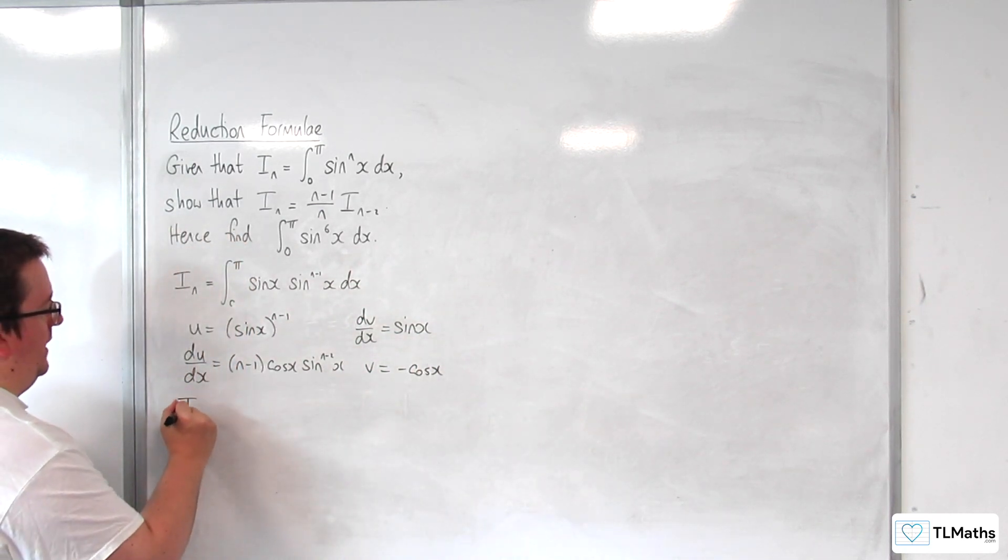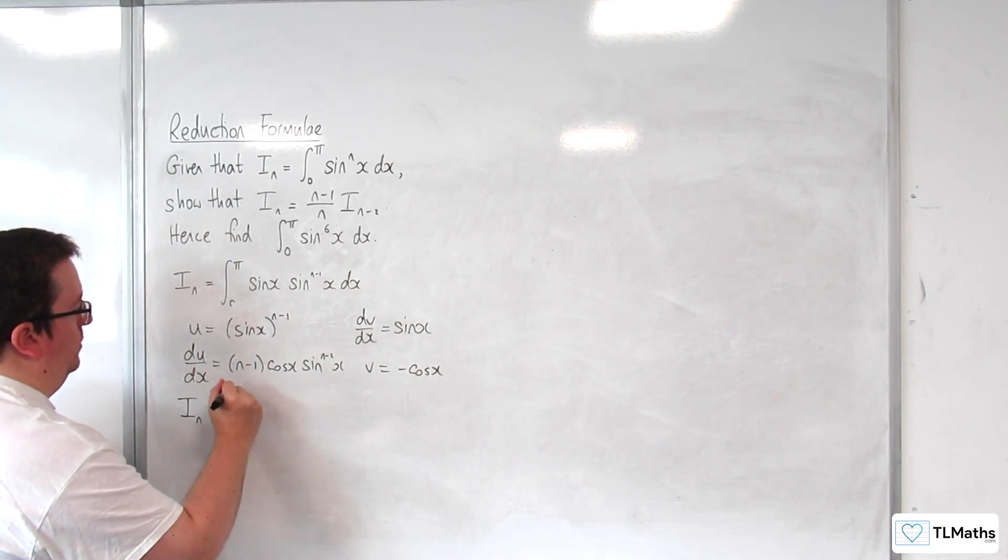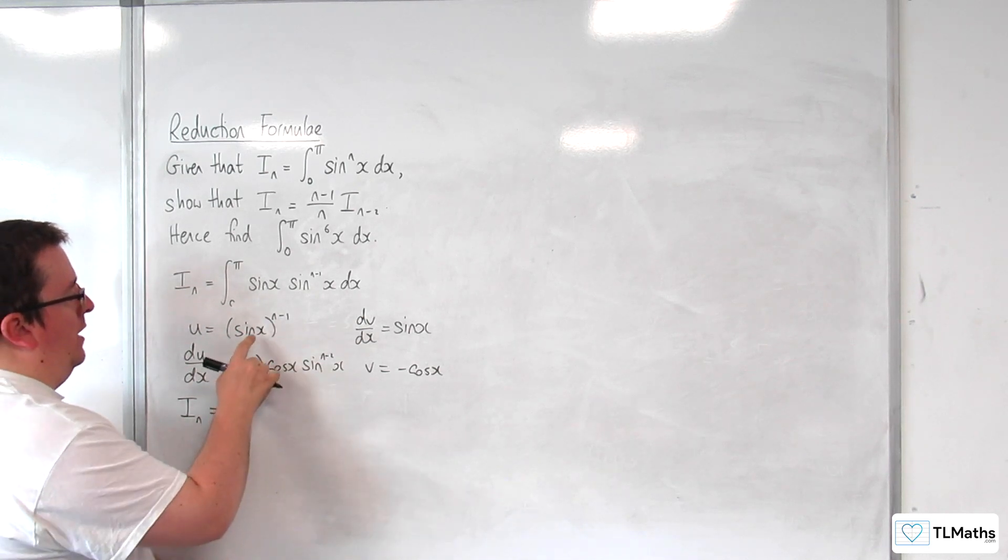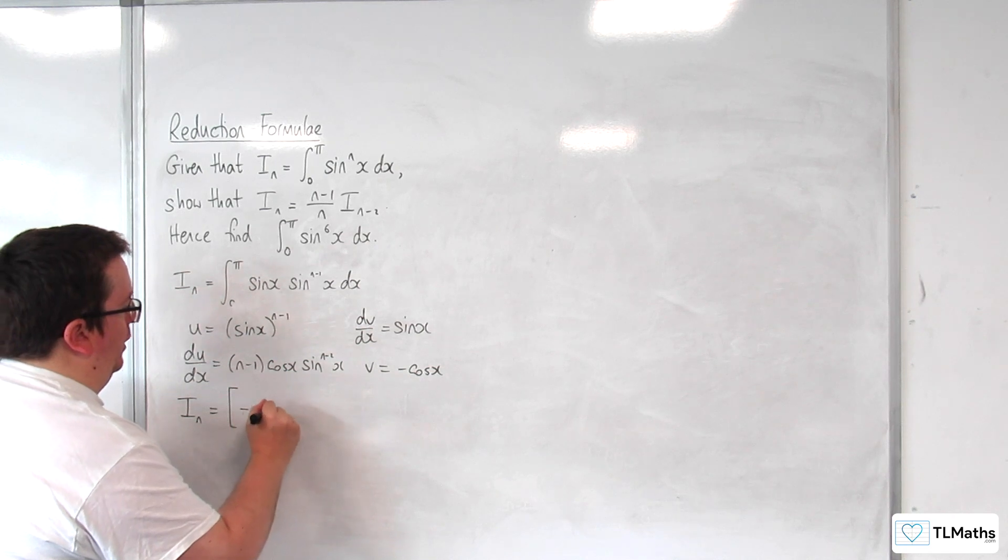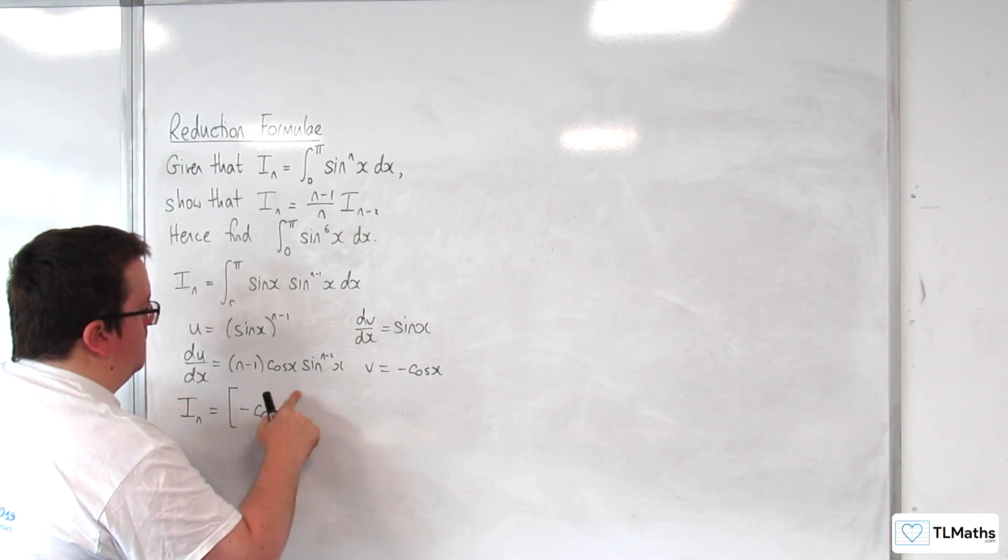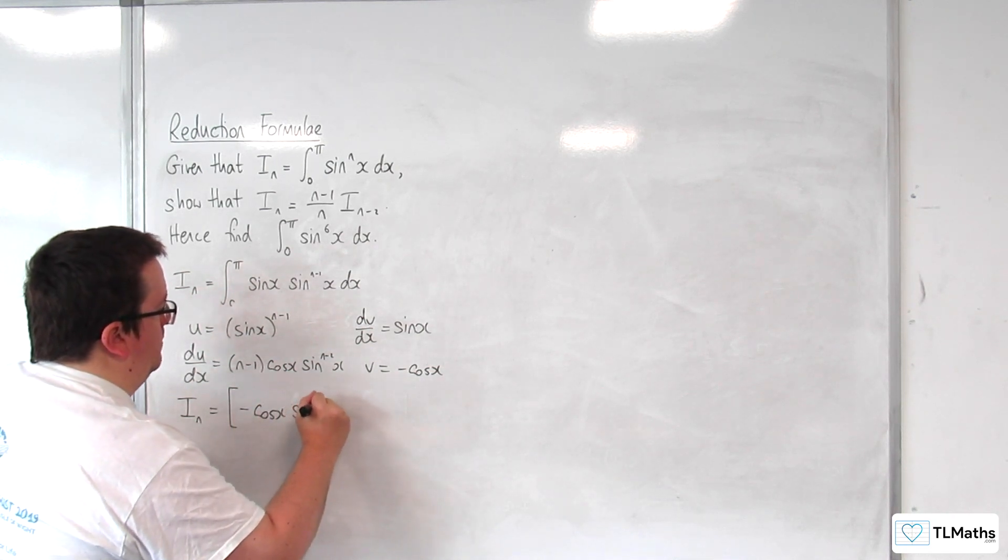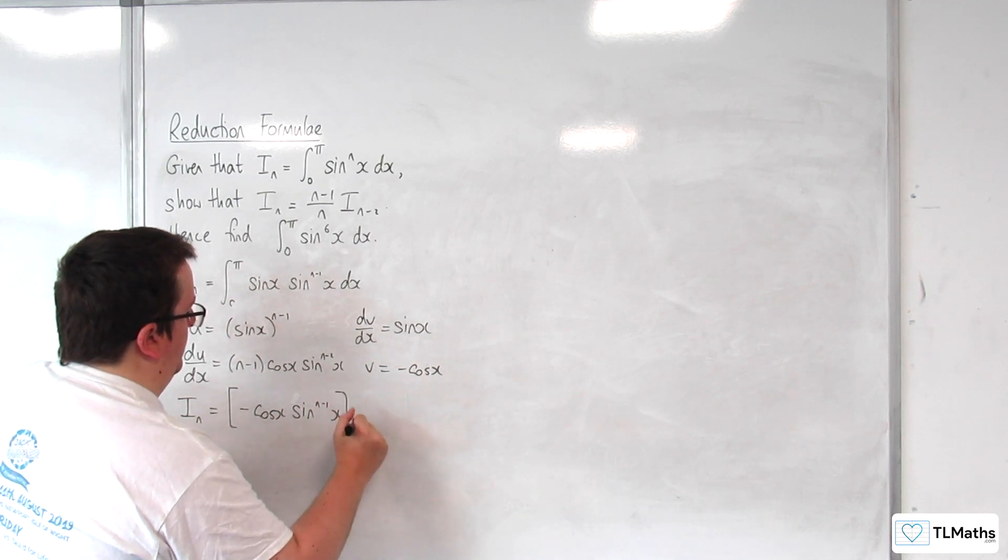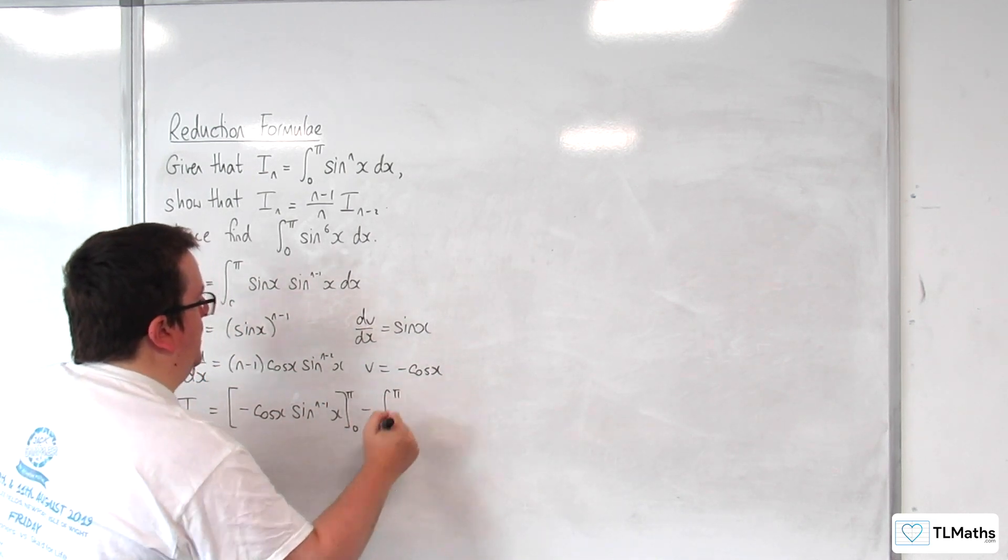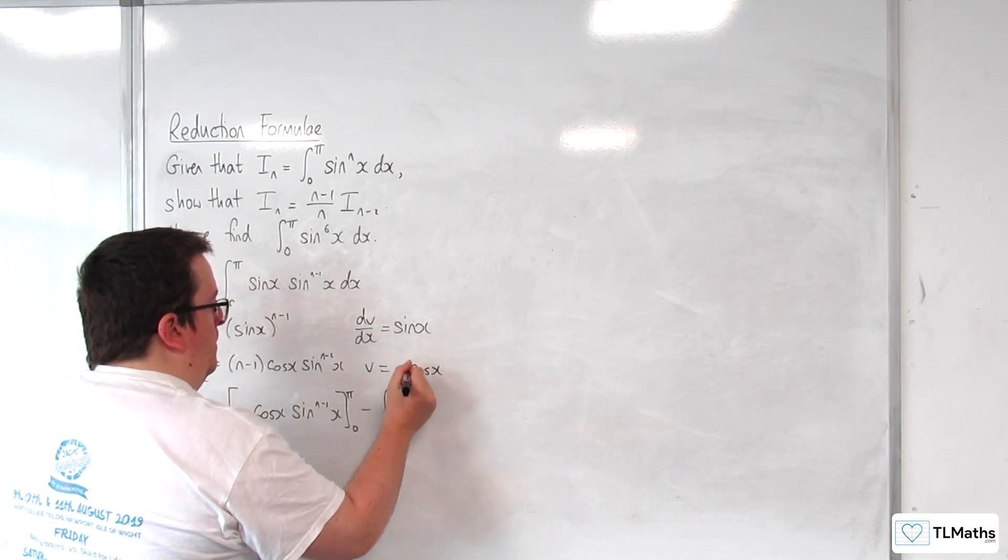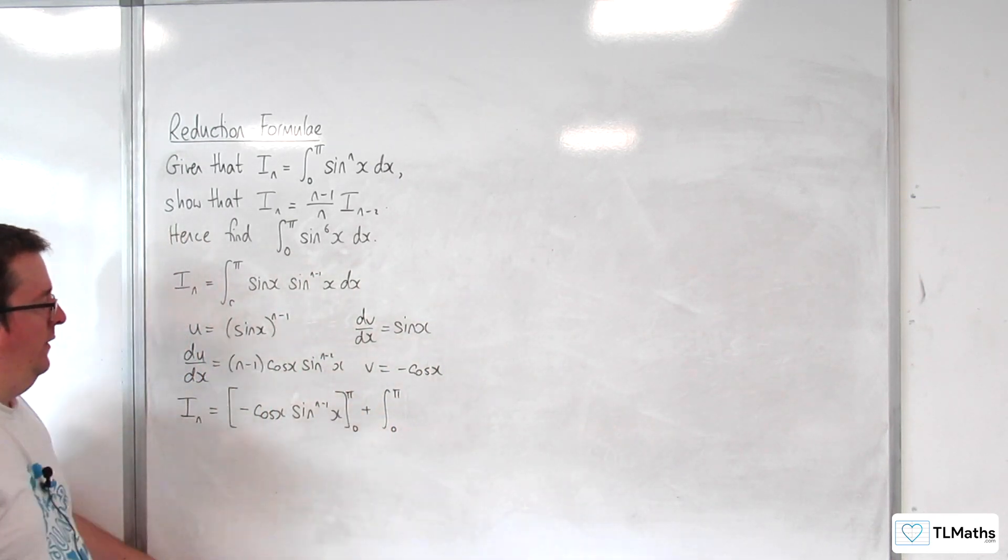So that means I_n equals the integral of u times v. So -cos(x) times sin^(n-1)(x) evaluated from 0 to π, take away the integral from 0 to π of v times du/dx. So minus sine minus sine, so that's going to be plus.